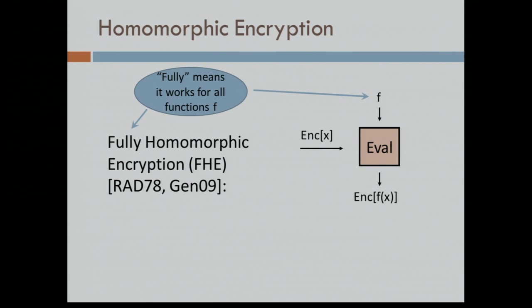It's useful to think of homomorphic encryption as coming in two flavors. There's somewhat homomorphic encryption — it lets you compute on encrypted data, but maybe not everything. You can compute some class of functions on encrypted data. Everything we had before Craig's 2009 work was of this variety: you could compute additive or linear functions, or branching programs. Post-2009, we also have fully homomorphic encryption, which means one encryption scheme where you can compute any function on the encrypted data that you want.